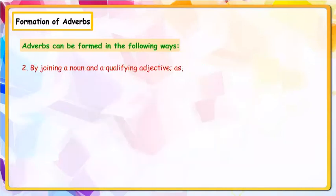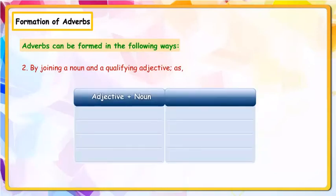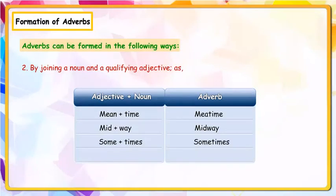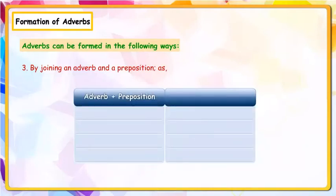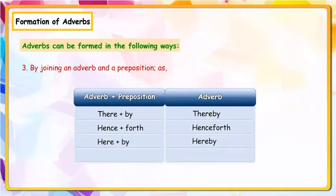By joining a noun and a qualifying adjective: Adjective + noun → adverb. Mean + time = meantime; Mid + way = midway; Some + times = sometimes; Yesterday + day = yesterday. By joining an adverb and a preposition: Adverb + preposition → adverb. There + by = thereby; Hence + forth = henceforth; Here + by = hereby; Here + with = herewith.